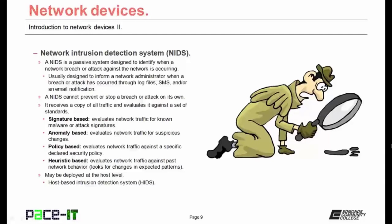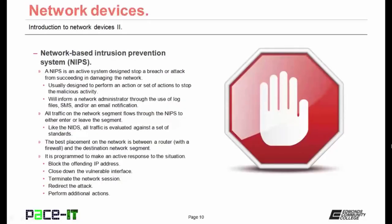The intrusion detection system may be deployed at the host level as well. When it's placed on a host, instead of being called a NIDS, it's called a HIDS. Then there's the Network Based Intrusion Prevention System, or NIPS. A NIPS is an active system designed to stop a breach or an attack from succeeding in damaging the network. They're usually designed to perform an action or set of actions to stop the malicious activity. Like the NIDS, the NIPS will inform a network administrator through log files, text messages, voicemail, and/or email notifications. All traffic on the network is required to flow through the NIPS to either enter or leave the segment.